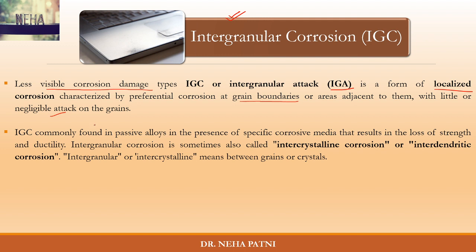IGC is commonly found in passive alloys, generally because when you mix two or three metals together, there are highly likely portions of grain boundaries that attain anodic and cathodic character. It also happens in specific corrosive media — not every time alloys corrode, but in the presence of specific corrosive media like ammonia or others. Both conditions have to be met.